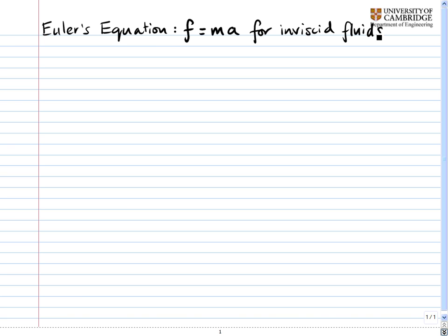Euler's equation is just F equals ma for inviscid fluids. Inviscid just means that there is no viscosity. And once we have the concept of the material derivative, it's actually quite easy to derive Euler's equation.